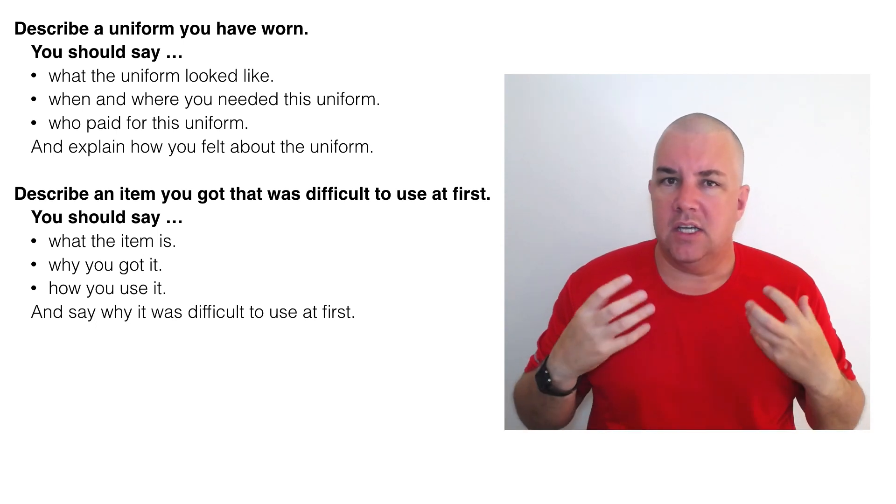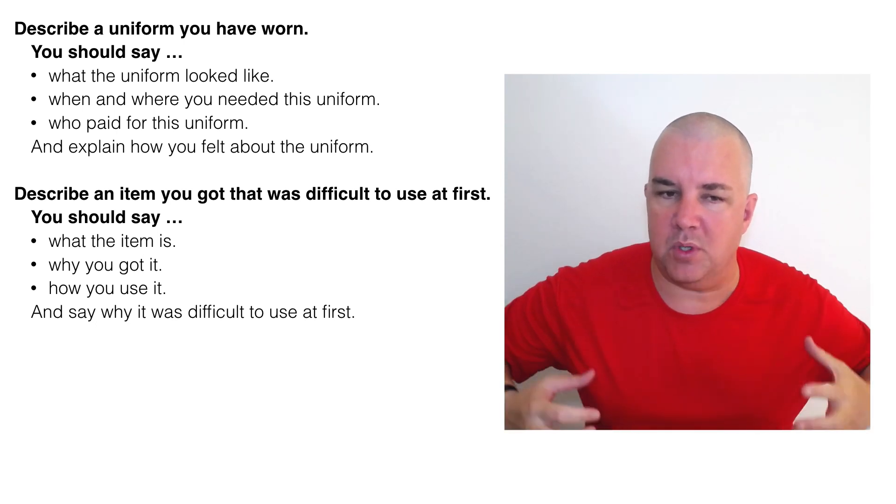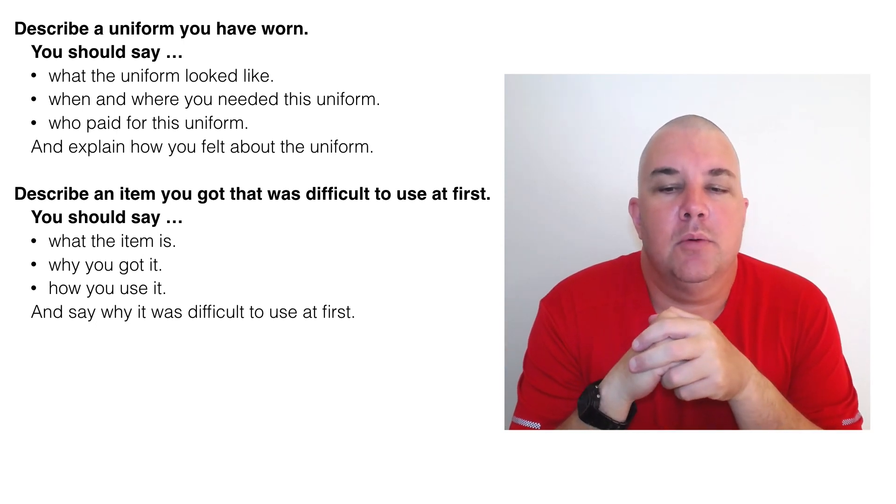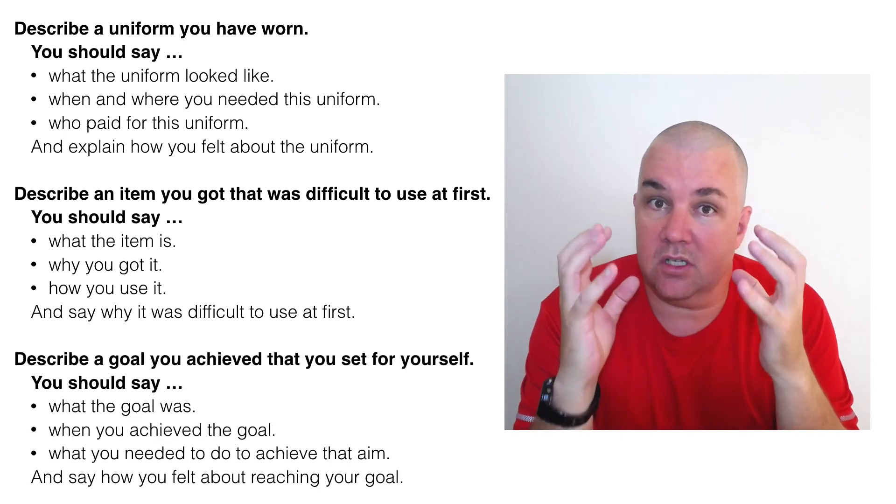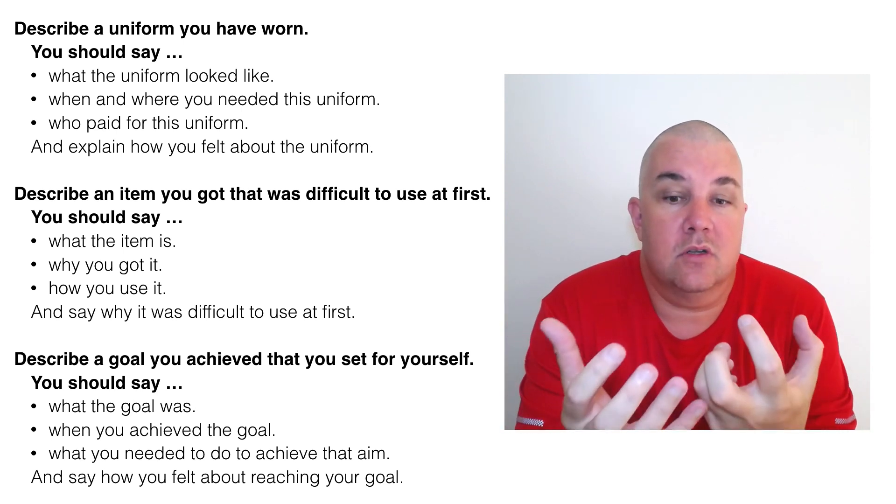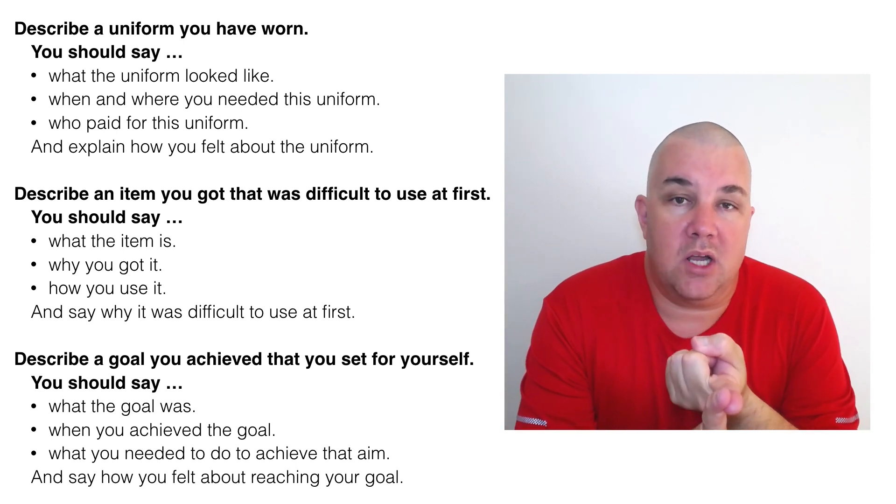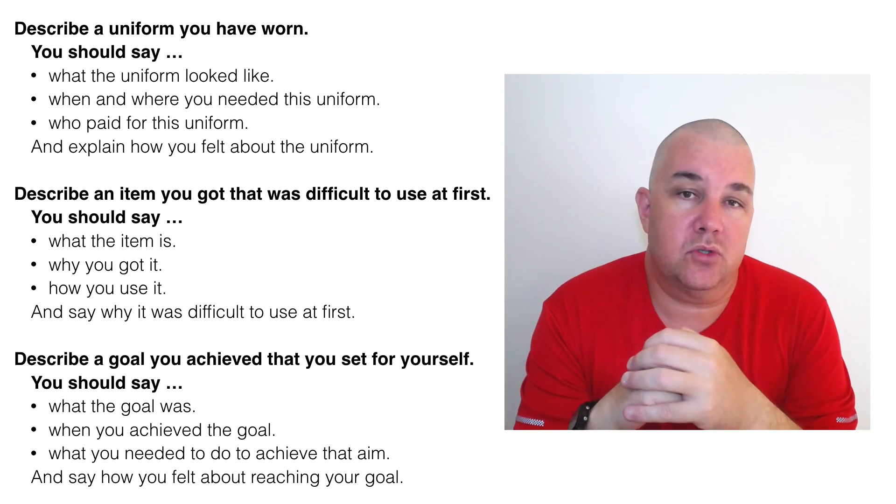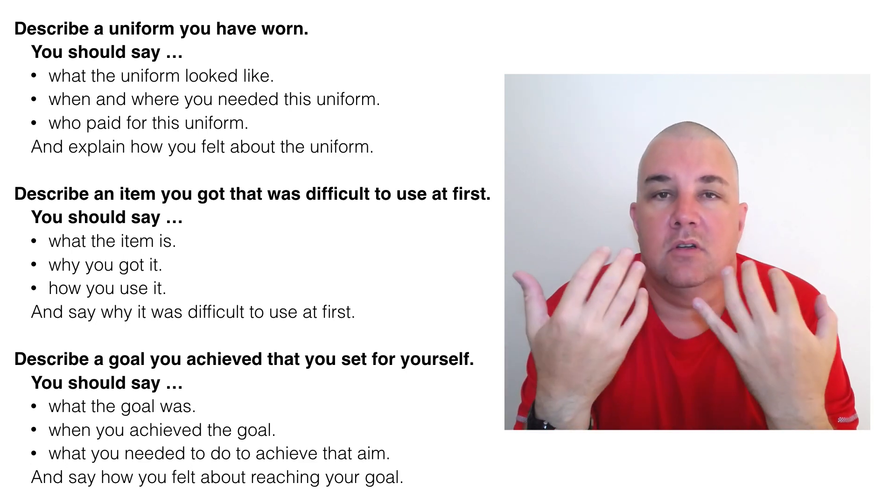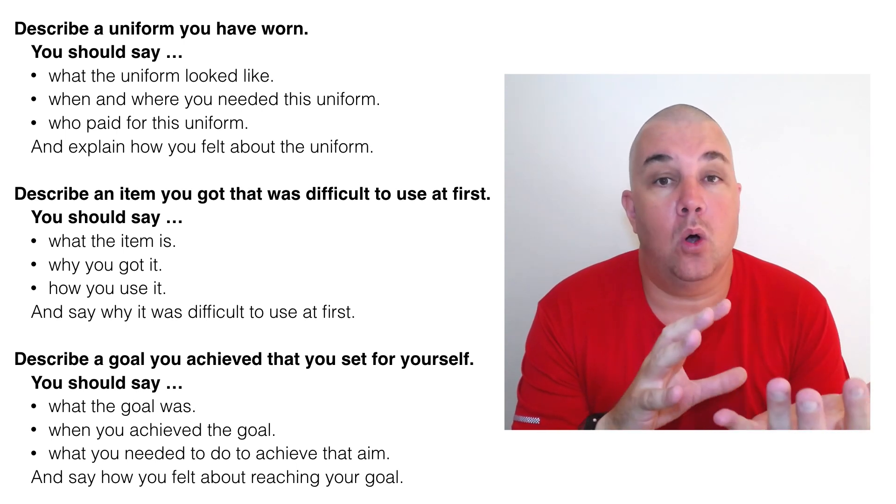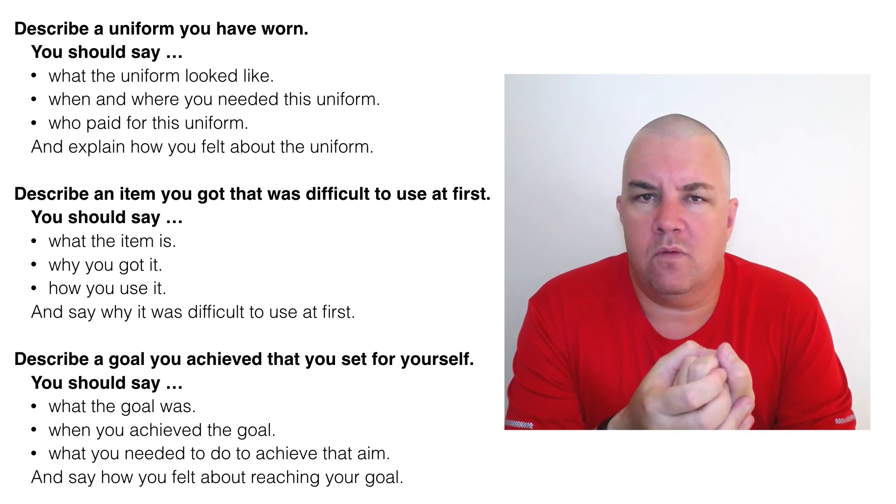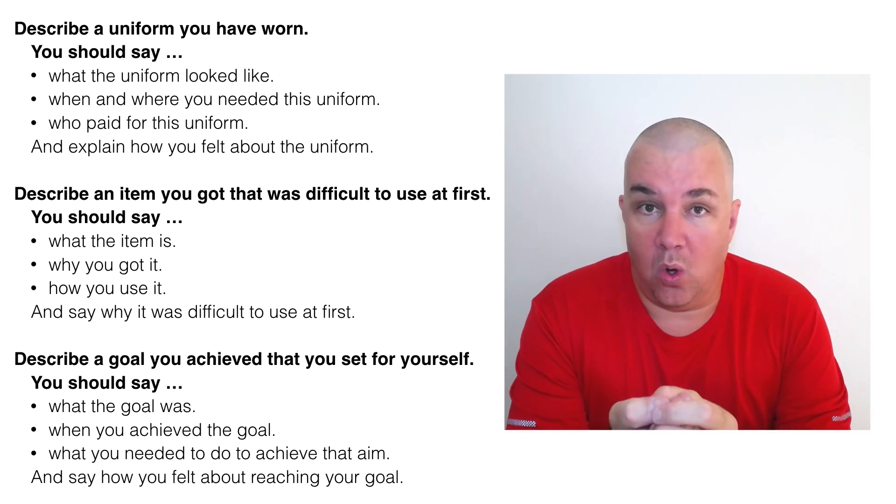And the last one is not a tangible thing, not something you can pick up and touch. But describe a goal you achieved that you set for yourself. So a goal is still an item. It's a thing. It's a noun. What the goal was. My goal was to lose 20 kilos. Talk about when you achieved it, what you needed to do, and how you felt. Talk about why you have that goal. How long you had that goal for. Talk about the specifics of that goal. And how it would make you feel.